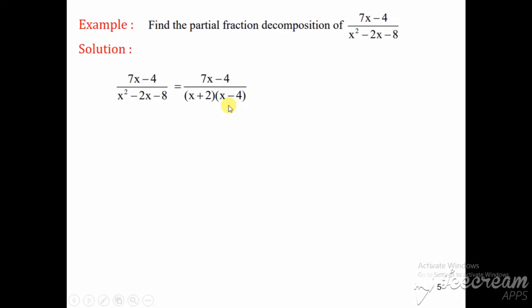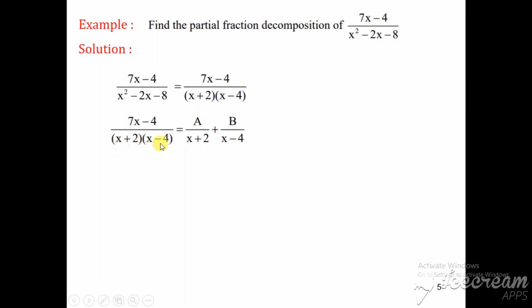Now we use the table from the previous slide to write the terms in the partial fraction decomposition. The fraction becomes (7x - 4) / [(x + 2)(x - 4)]. Both factors, (x + 2) and (x - 4), are of the type (ax + b), so we write: (7x - 4) / [(x + 2)(x - 4)] = A/(x + 2) + B/(x - 4), where A and B are constants to be determined.